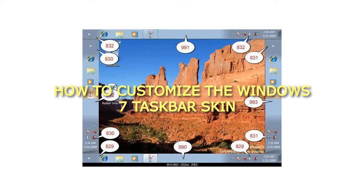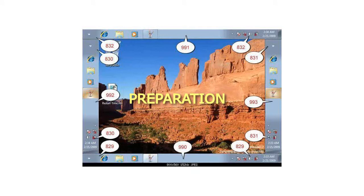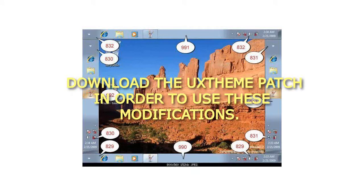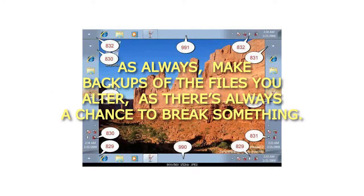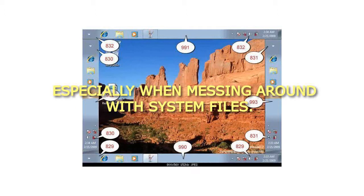How to customize the Windows 7 taskbar skin. Preparation: Step 1 — download the XThem patch in order to use these modifications. Make sure you download the right files. As always, make backups of the files you alter, as there's always a chance to break something, especially when messing around with system files.